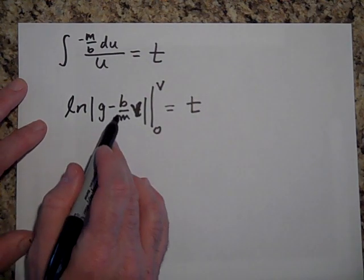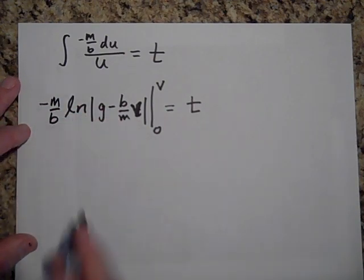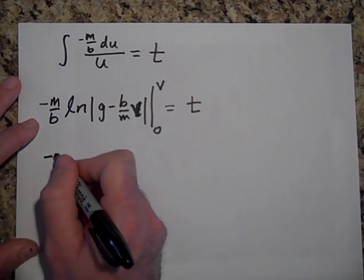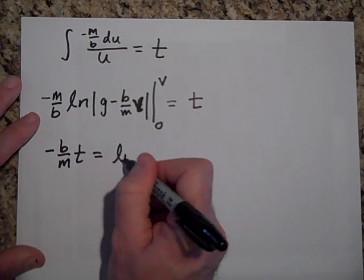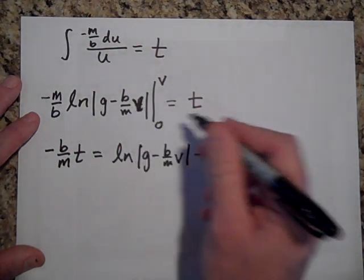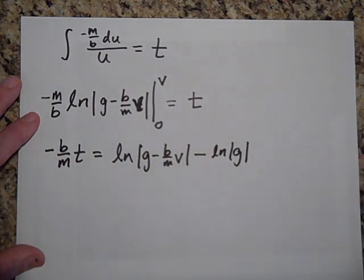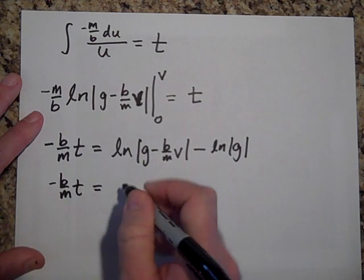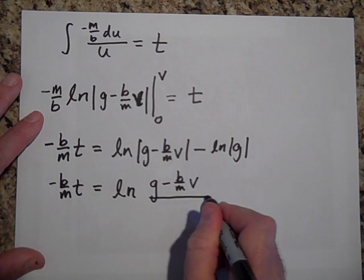Wait — there's a negative m over b factor that I pulled out of the integral. Let me move that over to the other side, so I get negative b over m times t. On the other side, substituting in, I get the natural log of (g minus (b/m)v) minus, and when you put in zero that term goes away, so I just get the natural log of g.